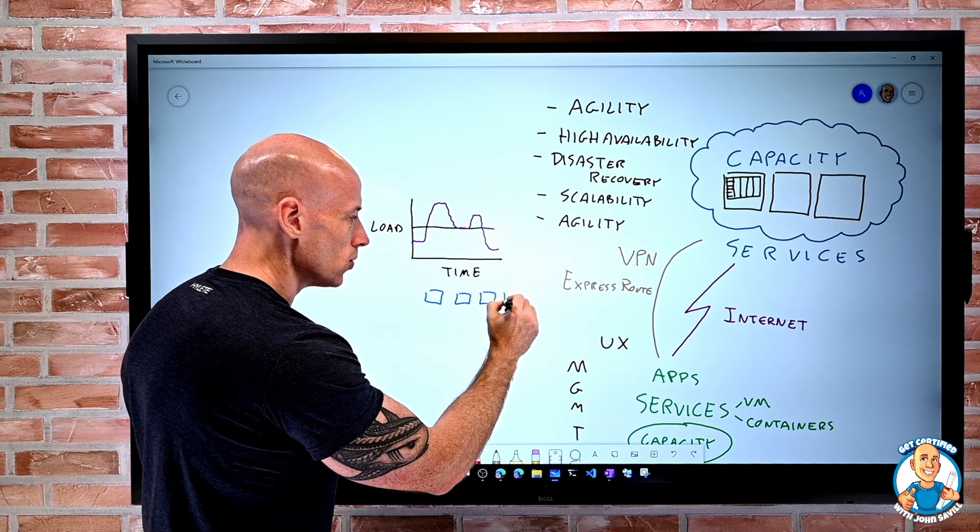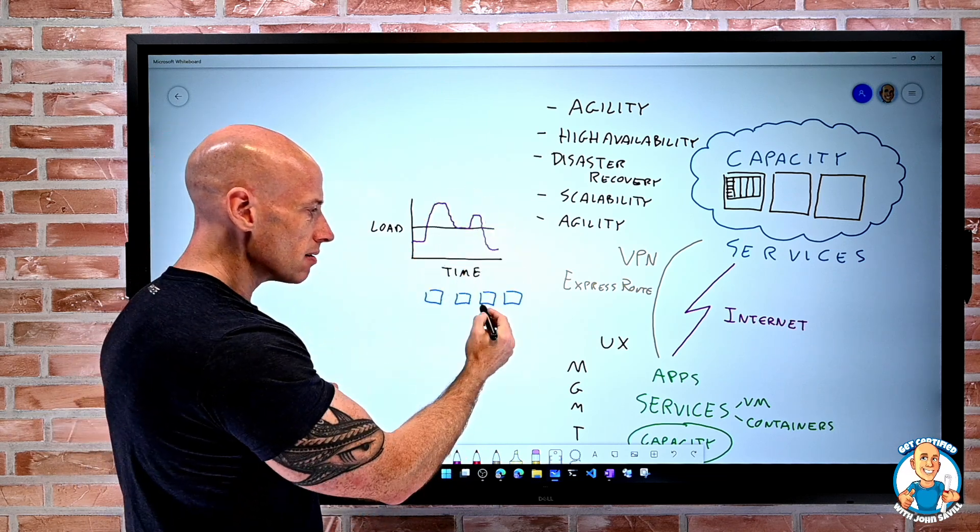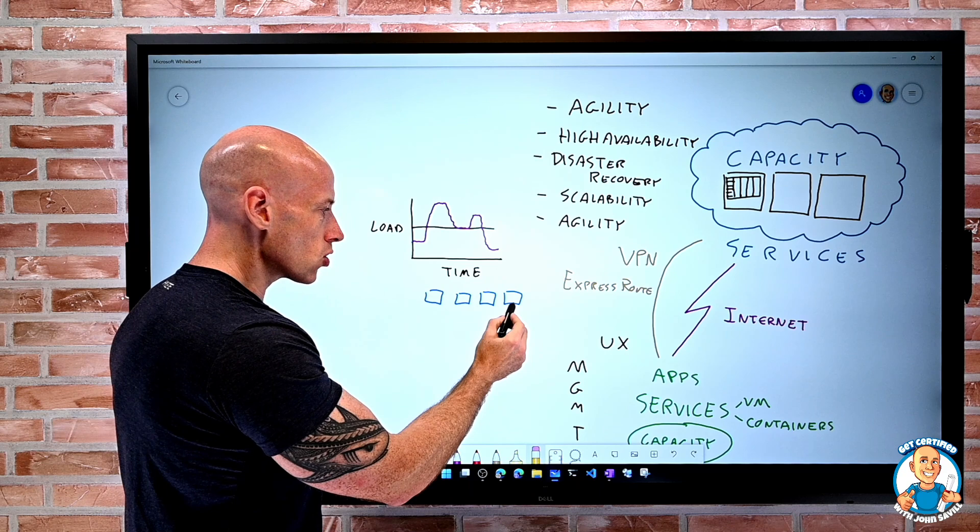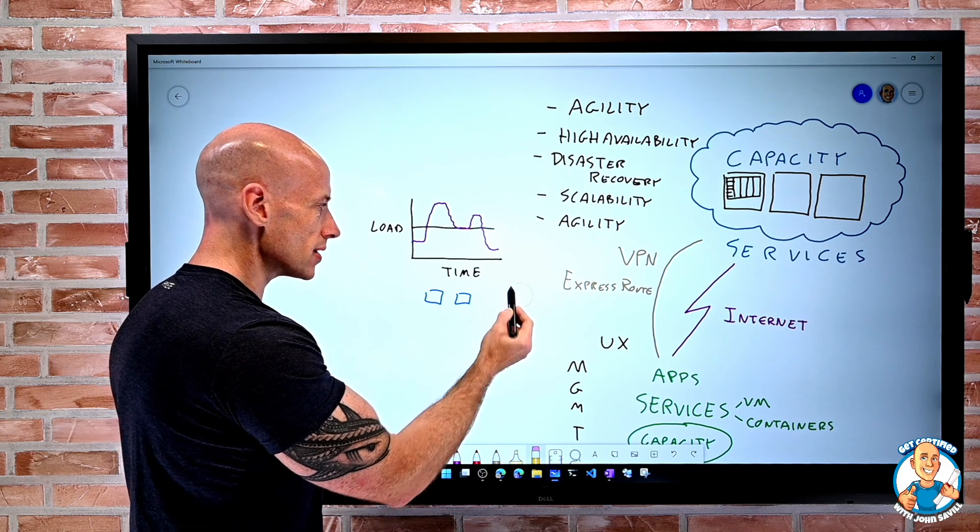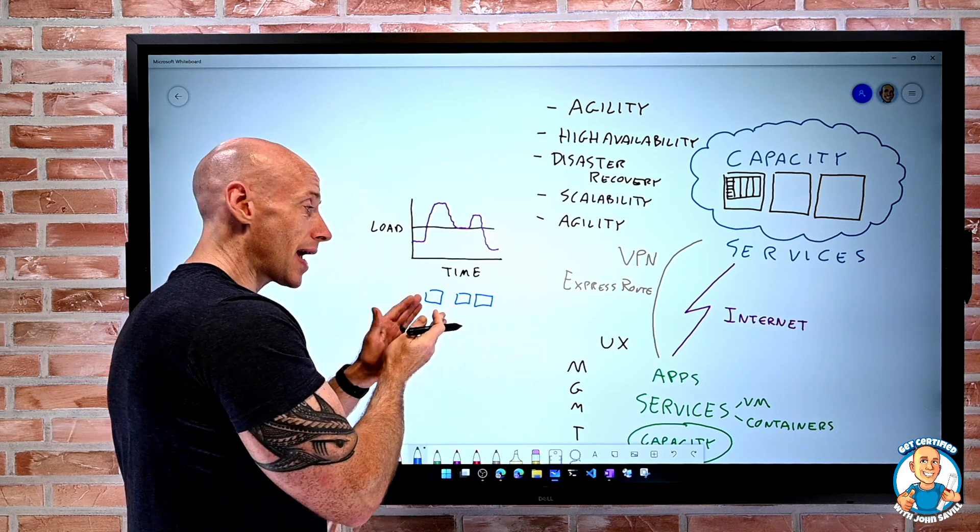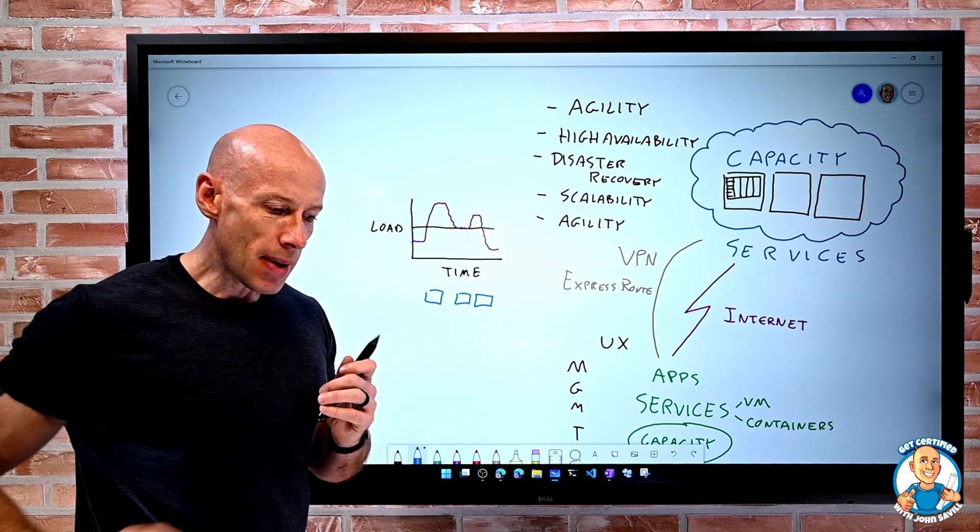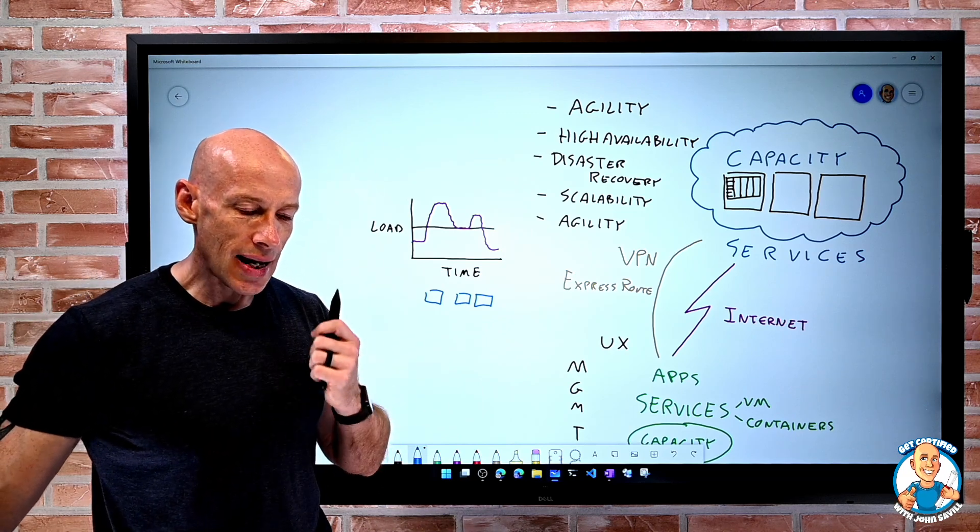Hey, I'm really busy. I need four instances. Hey, it's got quieter. Now I just need two instances. Hey, it's at a medium time. I need three. So it's going to horizontally scale out, adding more and scale in, removing them based on the amount of work that is actually happening.